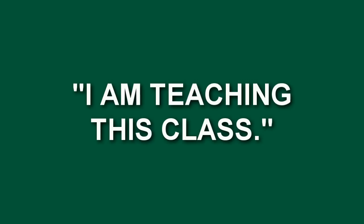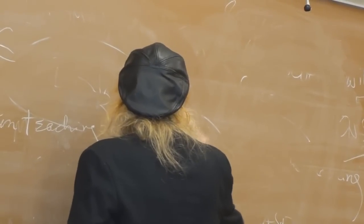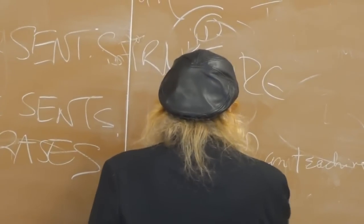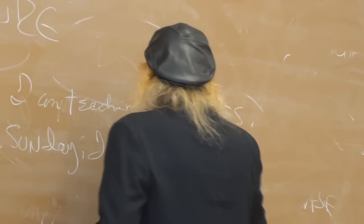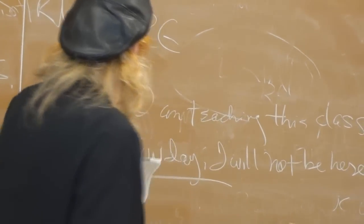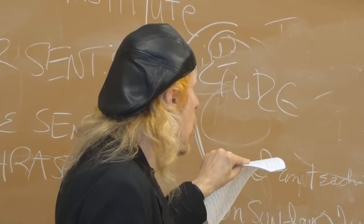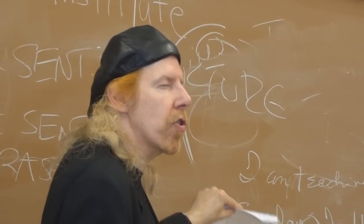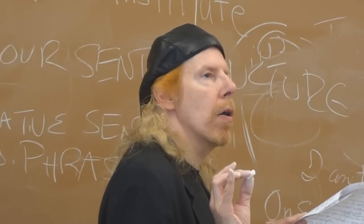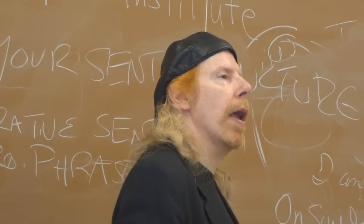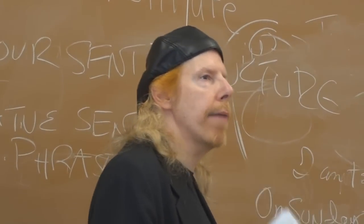A declarative sentence is just a straight sentence, like 'I am teaching this class.' Straightforward, no fuss. However, if I said 'On Sunday, I will not be here' — 'on Sunday' is an introductory phrase, followed by a comma. What you want to do in your paper is use about two to three sentences of each type, then switch. You'll be amazed at how that makes your paper more lively and makes you look like a better writer, because your reader isn't reading the same kind of thing over and over.